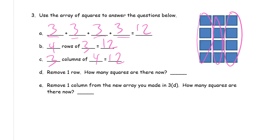If I remove a row, so I'm just going to cross one out. How many are there now? Well, count it. There's nine.